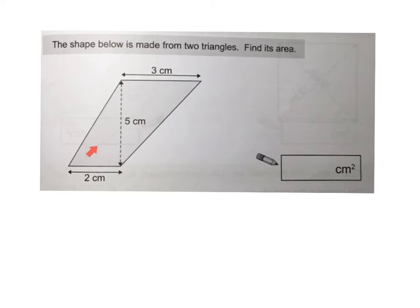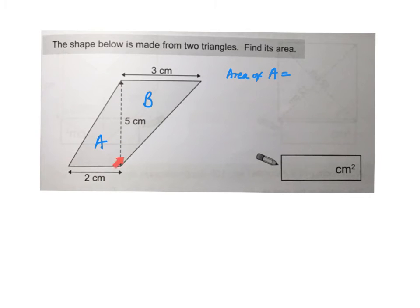What we need to do in these types of questions is label the two triangles. So if I label this as A and this one as B, the area of A is equal to the base, which is 2 centimetres, multiplied by the height, 5, divided by 2. 2 divided by 2 is 1. 1 times 5 is 5 centimetres squared.